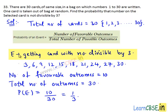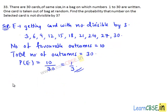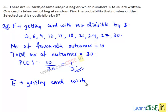Hence, the probability of getting a card with a number which is divisible by 3 is 1 divided by 3. Let E-bar be the event of getting a card with a number not divisible by 3.